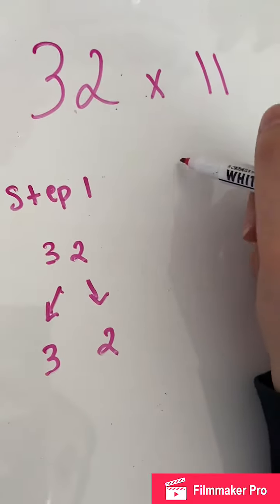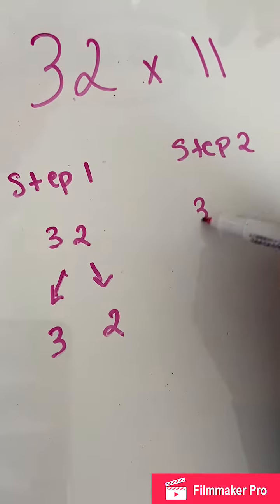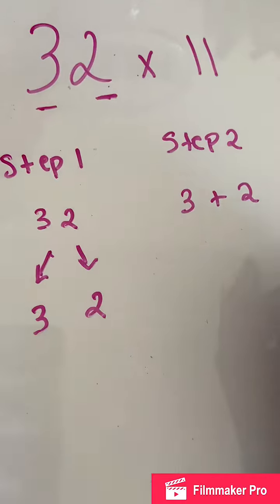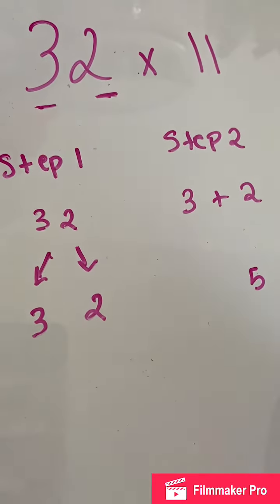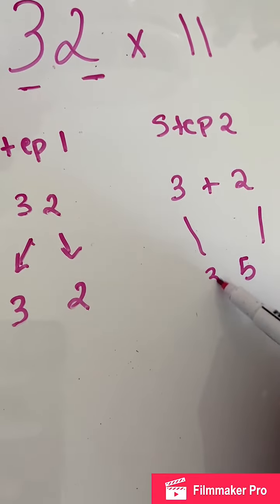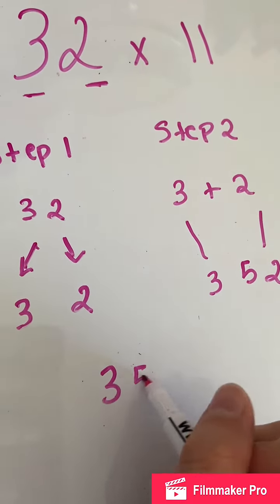Now let's move on to step two. In step two, we're gonna add three plus two, our number right here, three plus two, which gives us five. Then see those two numbers right here, we're gonna put them right here, three and two. Now we have our answer, 352.